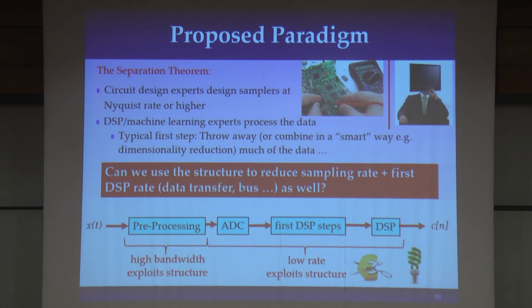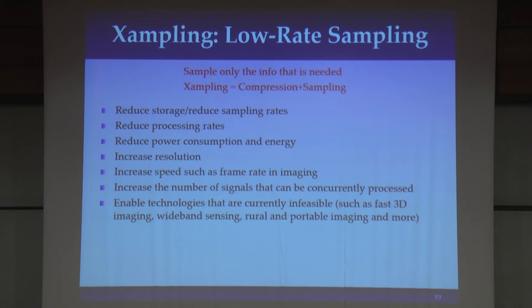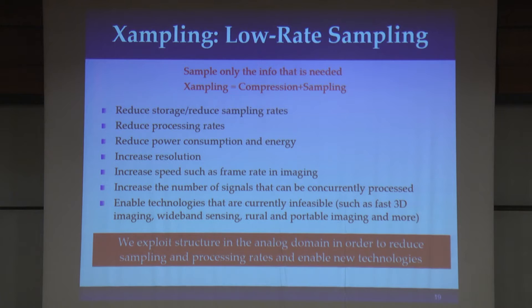This is really the goal of what we're going to be talking about throughout the workshop today: we want to sample only those parts of the signal that are important, only those parts that contain information. And if we can do this, it buys us a variety of different things — obviously, reducing sampling rate means reducing storage and reducing power, but there are also other benefits from exploiting the structure.